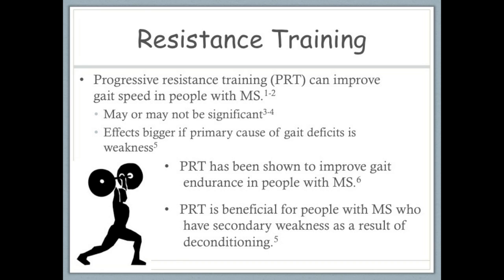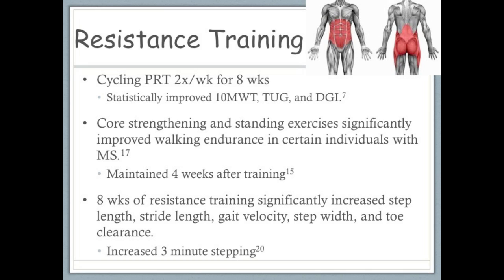Lower extremity progressive resistance training has also been found to increase gait endurance in people with MS, although studies are limited. Cycling progressive resistance training is another type of training that has been evaluated in the literature, with positive results seen in gait speed as well as other measures that identify balance impairments during gait activities. A few studies examining core strengthening and standing exercises also found improvements in walking endurance. Since core strength and trunk control are prerequisites to walking, core strengthening might be an undertreated impairment in people with MS. In terms of kinematic changes that occur after progressive resistance training, preliminary evidence suggests that step and stride length, gait velocity, step width, and toe clearance may all improve.